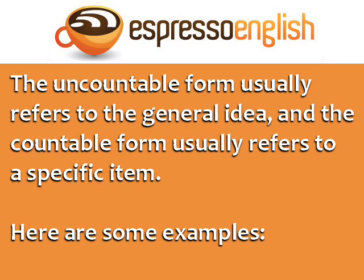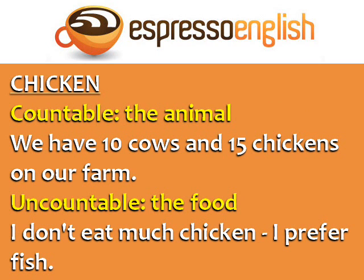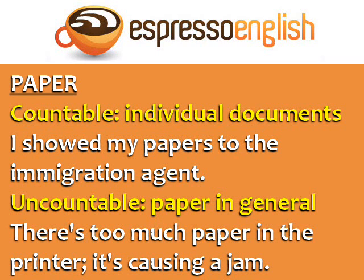Here are some examples. 'Chicken' is countable when talking about the animal: 'We have ten cows and fifteen chickens on our farm.' 'Chicken' is uncountable when talking about the food: 'I don't eat much chicken, I prefer fish.' 'Paper' is countable when talking about individual documents: 'I showed my papers to the immigration agent.'